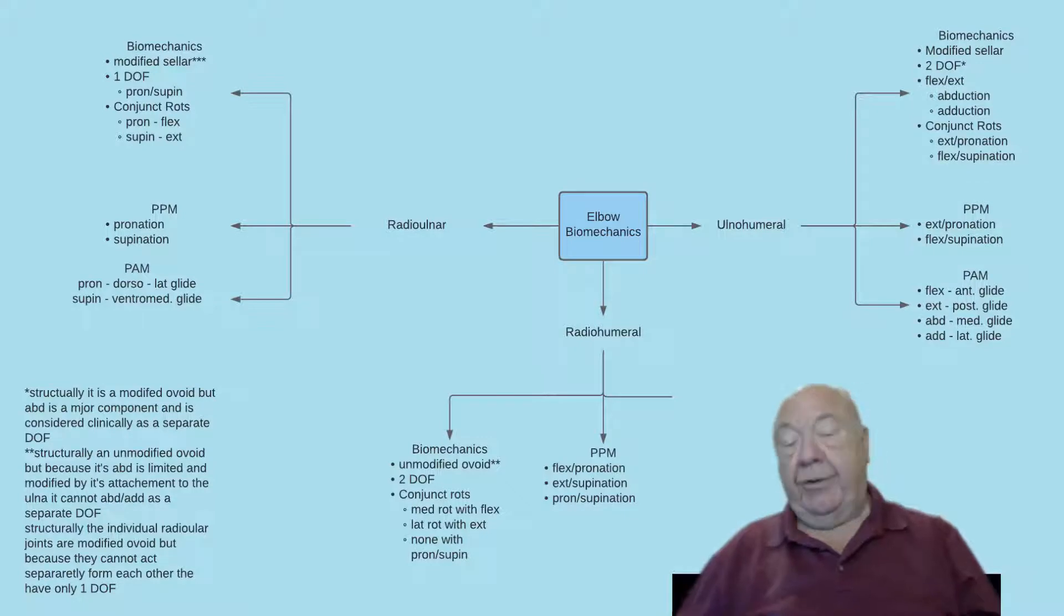The elbow is an interesting joint. As we said before, there are three joints you have to consider: ulnar humeral, radio humeral, and radioulnar. We're going to ignore the inferior radioulnar, which has to be assessed with the wrist. For purposes of this discussion, we're going to ignore it.